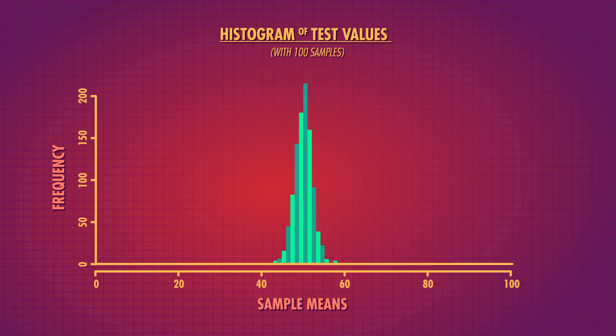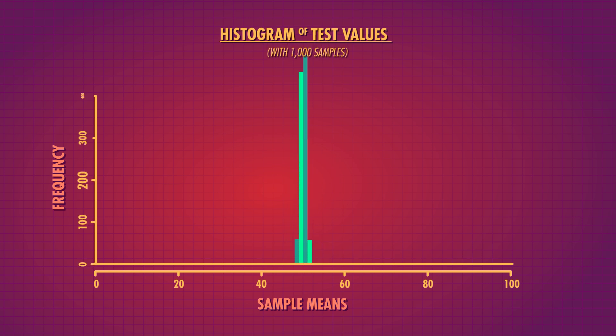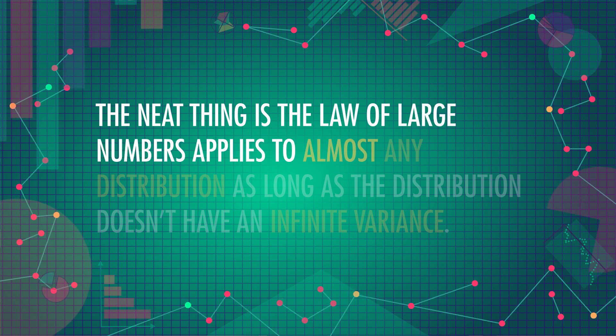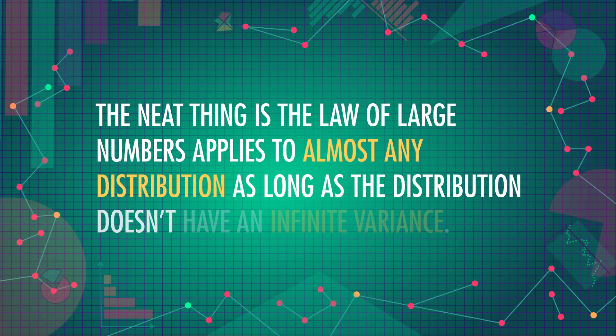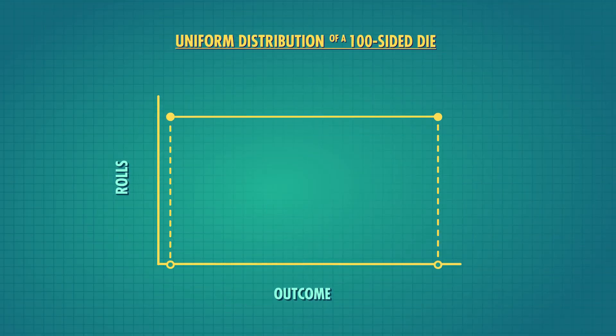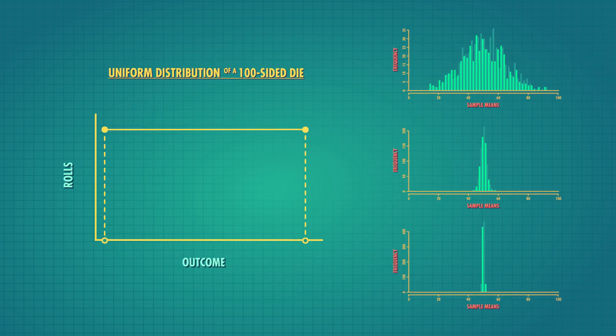And when we go up to 1000, just about every sample mean is very, very close to the true mean. The neat thing is the Law of Large Numbers applies to almost any distribution, as long as the distribution doesn't have an infinite variance. Take the uniform distribution, which looks like a rectangle — imagine a 100-sided die, where every single value is equally probable. Even the sample means selected from a uniform distribution get closer and closer to the true mean of 50. The Law of Large Numbers is the evidence we need to feel confident that the mean of the samples we analyze is a pretty good guess for the true population mean.